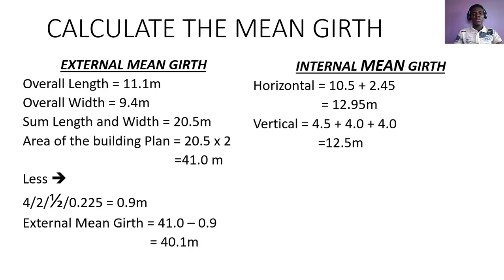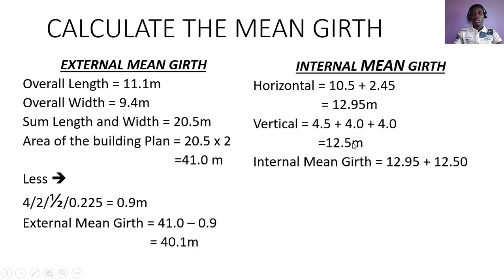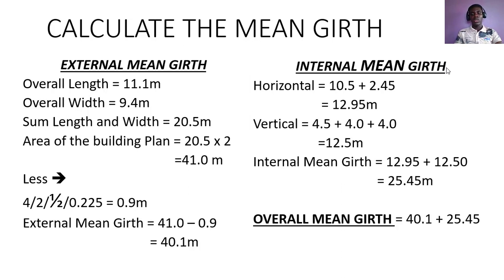After summing the vertical walls we carry out 12.5 meters. So before getting the internal main guard we sum the vertical and horizontal together. Our internal main guard is 25.45 meters. We then sum the external main guard and internal main guard to get our overall main guard, which is 65.55 meters.